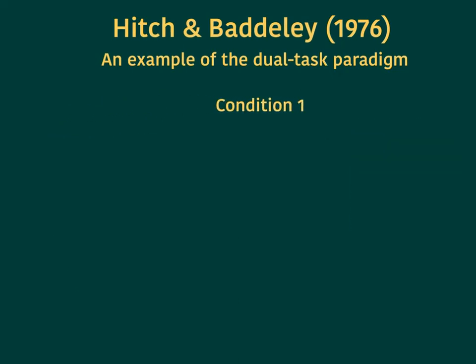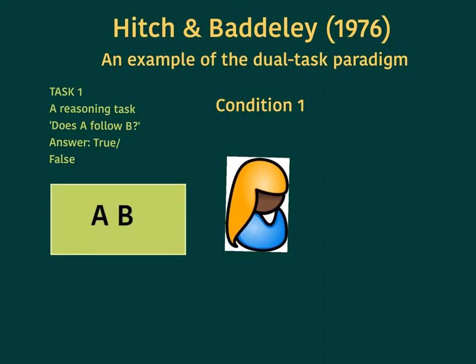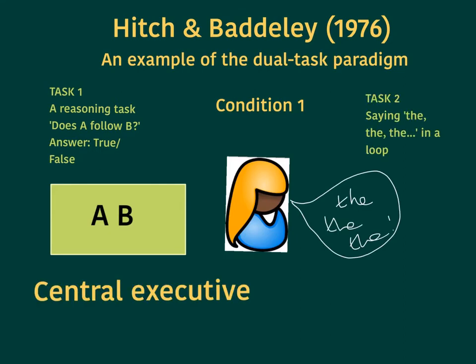In condition one, the tasks were as follows. Task one was a reasoning task: letters were flashed upon a screen, A and B or B and A, and the participant would be asked a question like 'does A follow B?' and would have to answer true or false depending on the sequence of letters on the screen. This uses the central executive. The second task was saying 'the' in a loop, which draws on the articulatory loop.